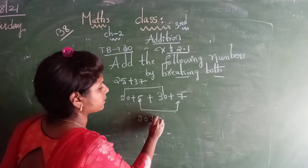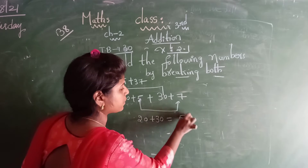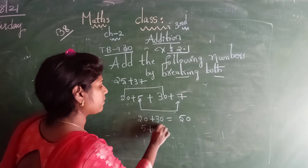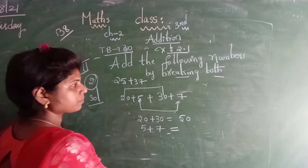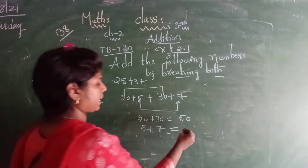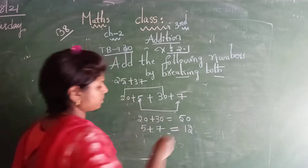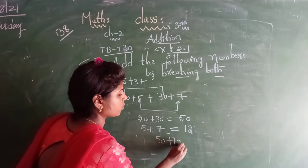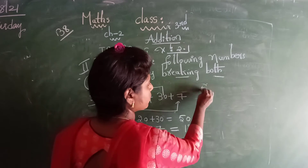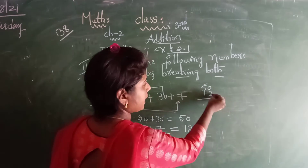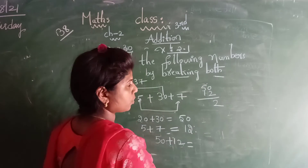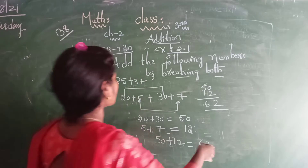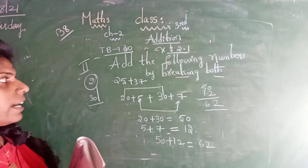20 plus 30 is equal to 50. 5 plus 7 — how much? 12. So then do the addition: 50 plus 12 — how much? 62. 2 plus 0 is 2, 5 plus 1 is 6. So what is the answer you got? 62 is the answer.